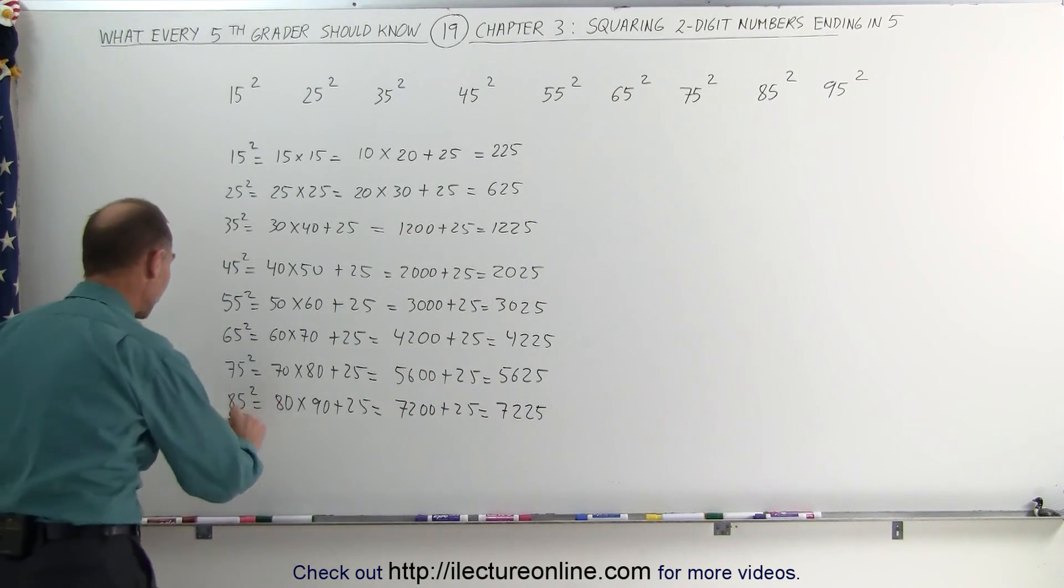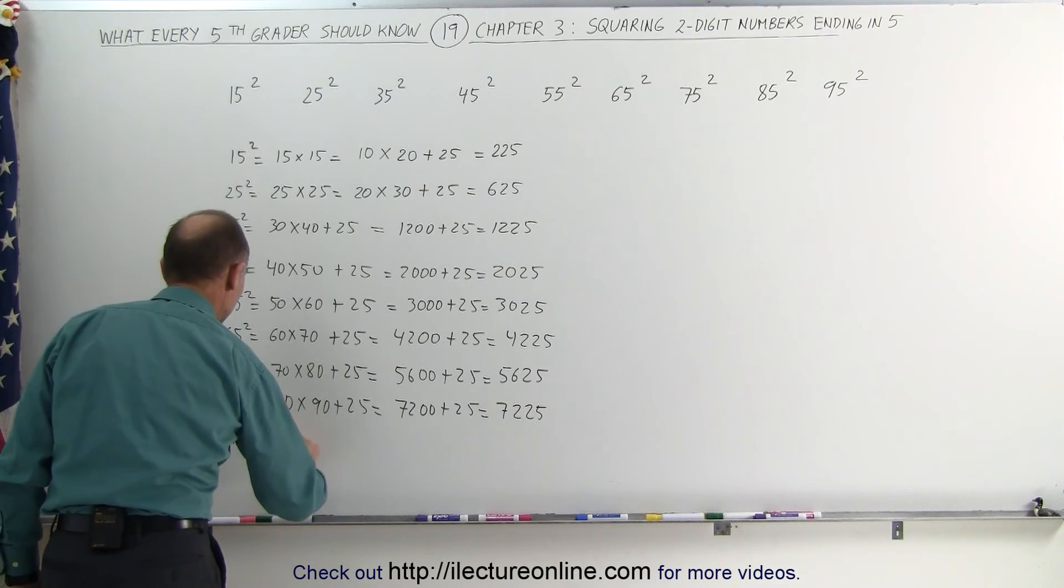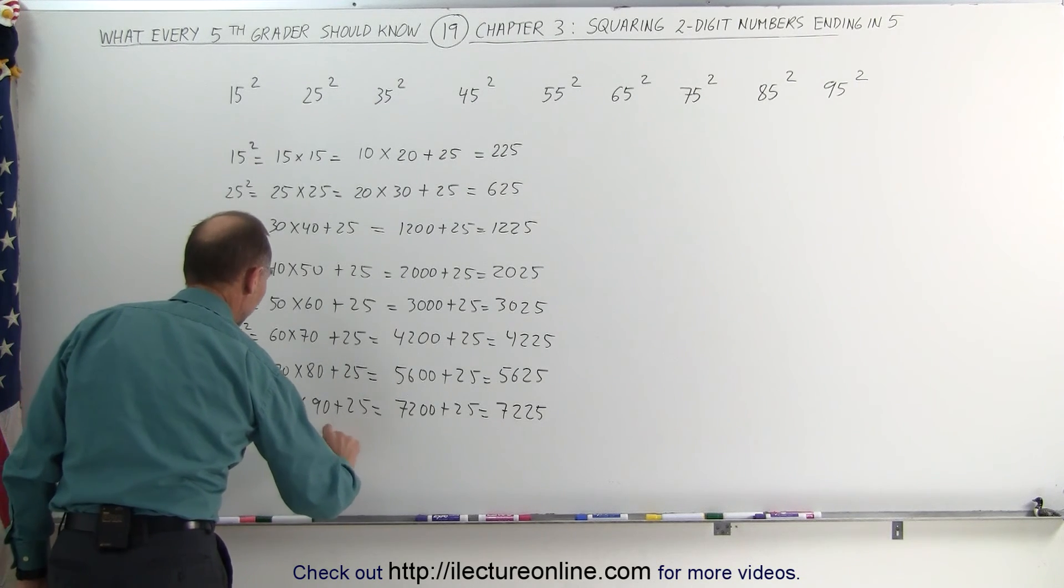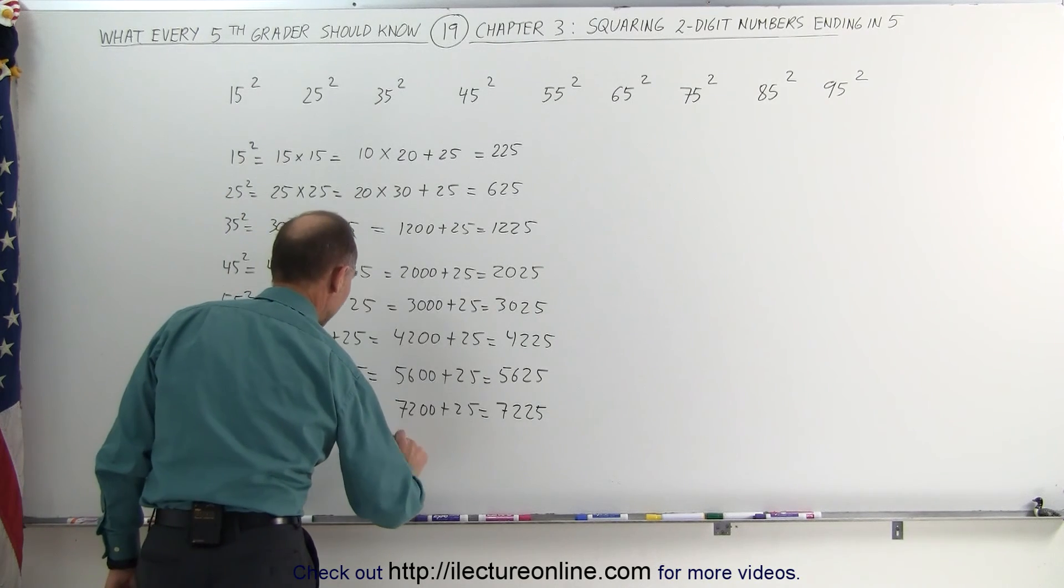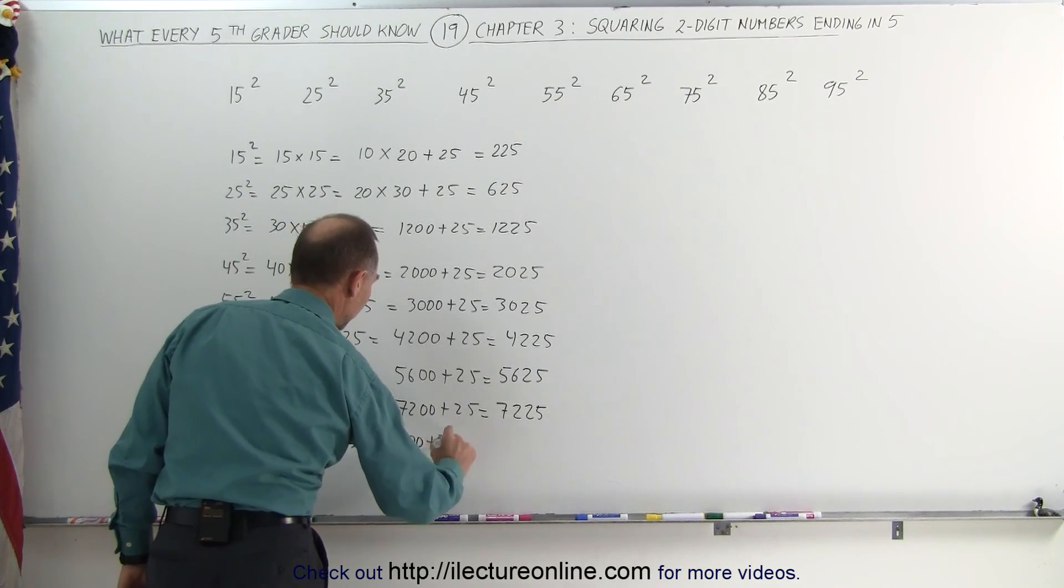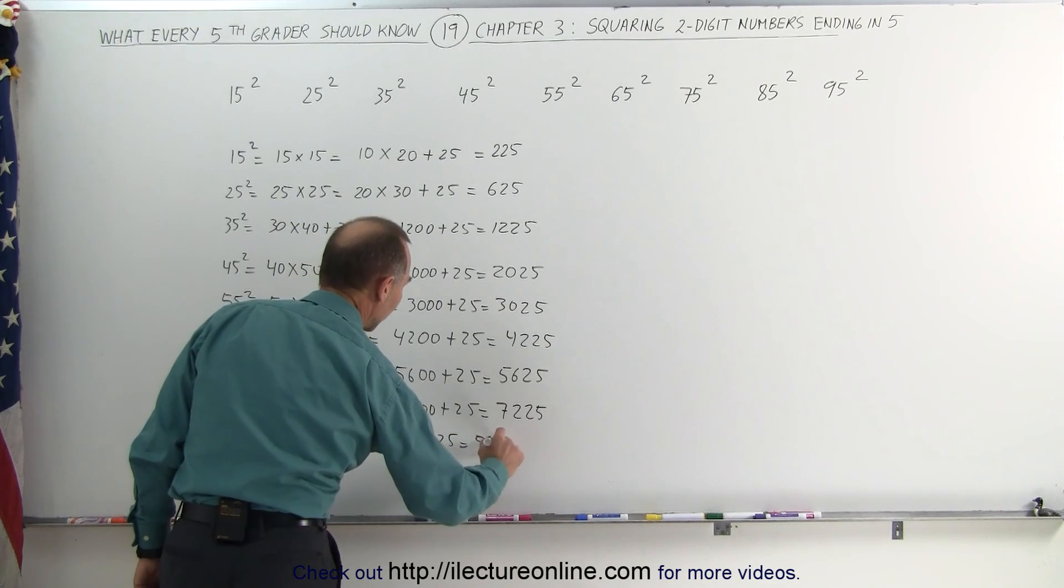And finally, let's try 95 squared. 95 squared, that's the same as 90 times 100, plus 25. 90 times 100 is 9,000, plus 25 is 9025.